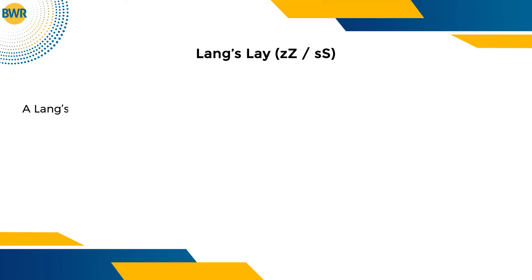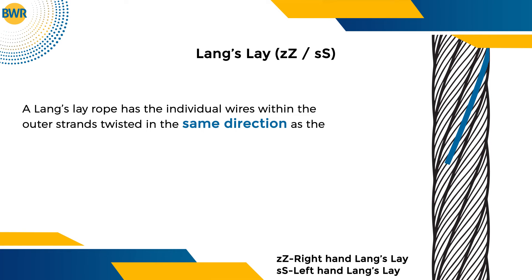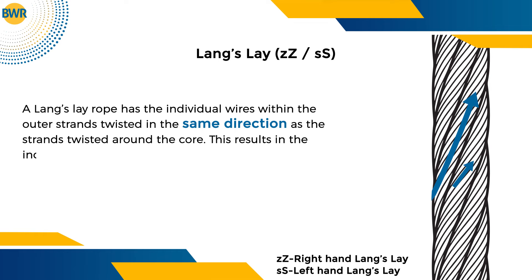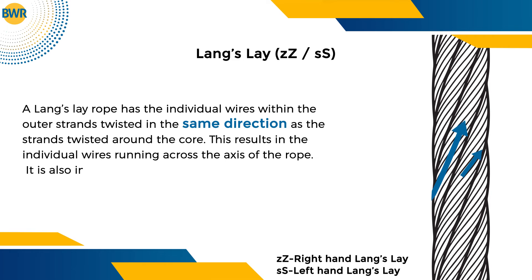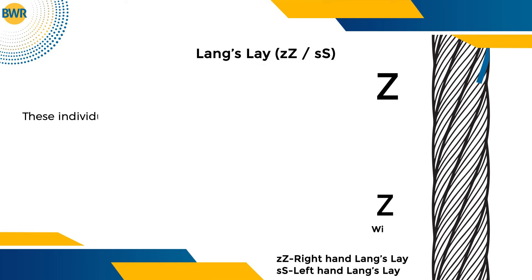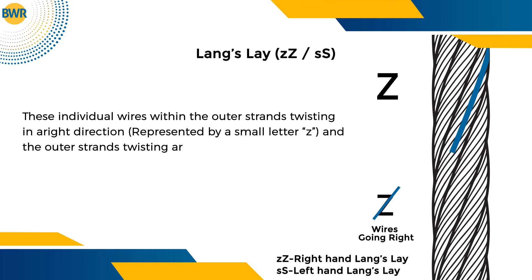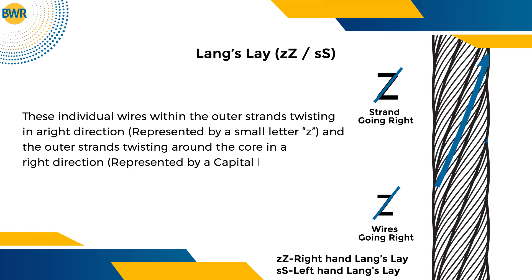Lang's Lay: A Lang's Lay rope has the individual wires within the outer strands twisted in the same direction as the strands twisted around the core. This results in the individual wires running across the axis of the rope. It is also indicated by ZZ for RHLL and SS for LHLL. The individual wires within the outer strands twist in a right direction, represented by a small letter Z, and the outer strands twist around the core in a right direction, represented by a capital letter Z.